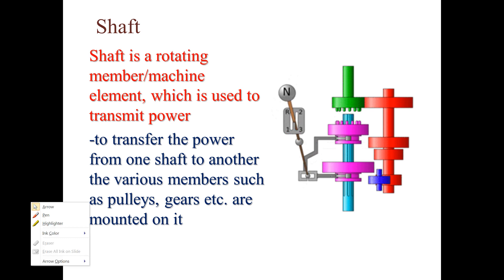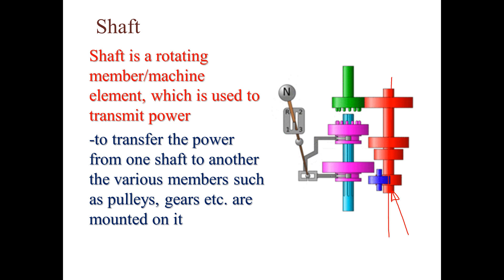In this diagram, the rotating cross-section member is a shaft, on which gears are mounted. This is one shaft with gears mounted on it, and another shaft also has gears mounted on it. The basic function of all shafts is to transmit power from one part to another.